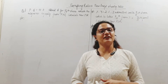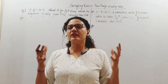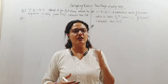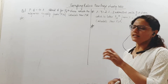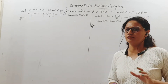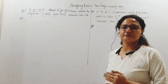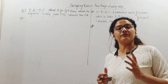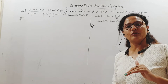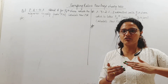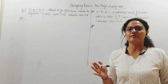We are back with one more video on admission. As we did in the previous video, we are calculating the sacrificing ratio and the new ratio. The first sum says P and Q are partners in a firm sharing profits in the ratio of 4 is to 3. They admit a new partner R for one-seventh share, which he acquires equally from P and Q. So here, both P and Q are sacrificing equally.